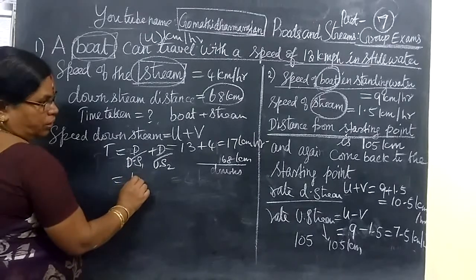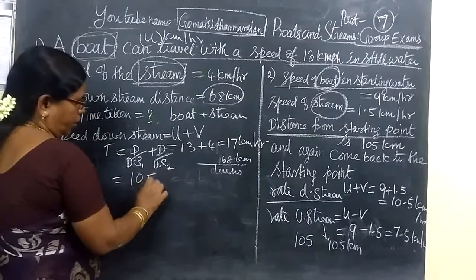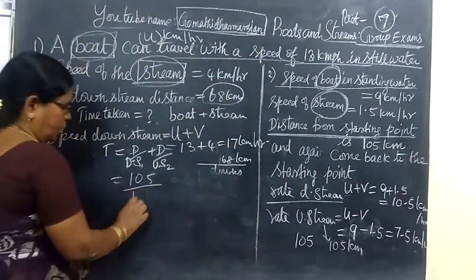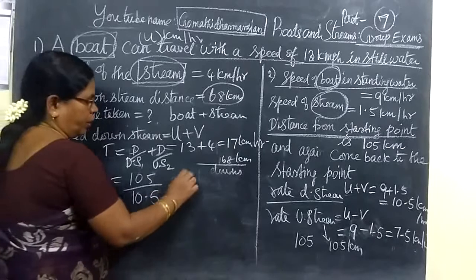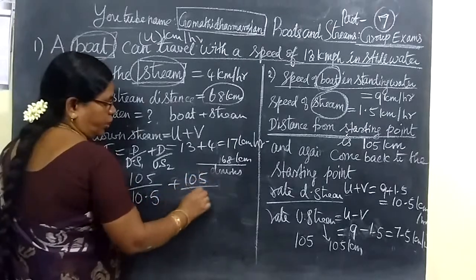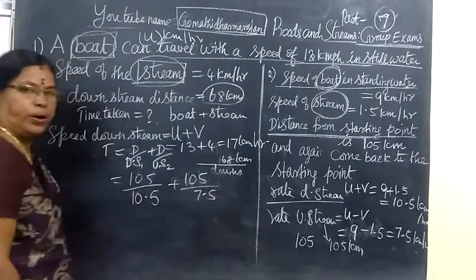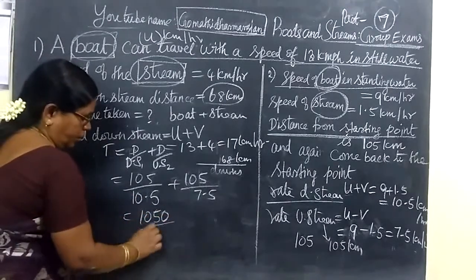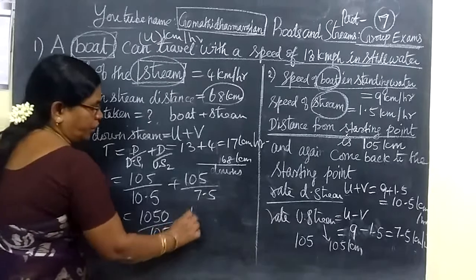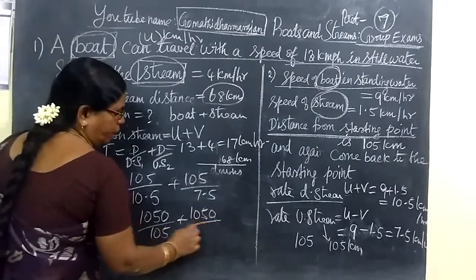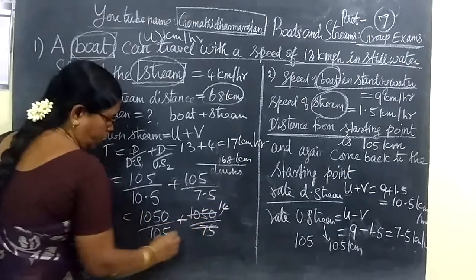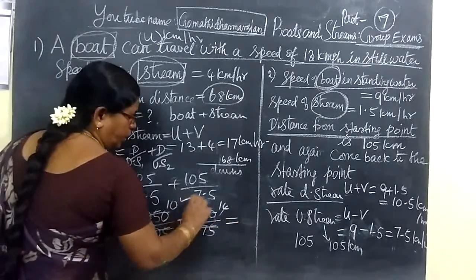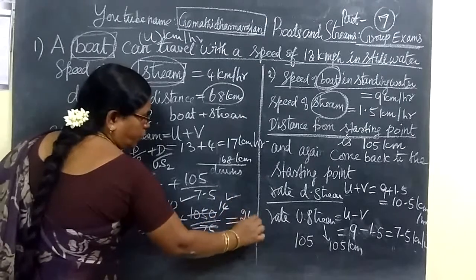This equals distance 105 by downstream speed 10.5, plus 105 by 7.5. To remove the points, we multiply by 10. The total time taken equals 10 plus 14, which is 24 hours.